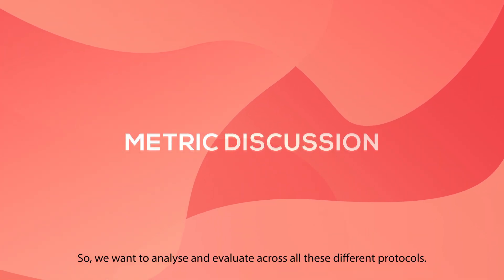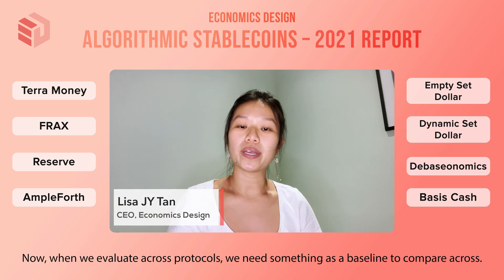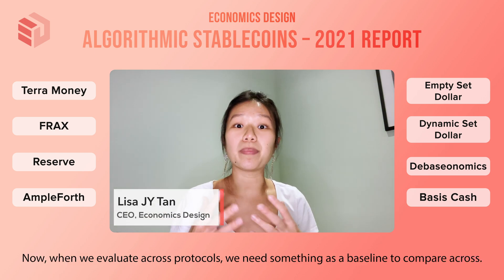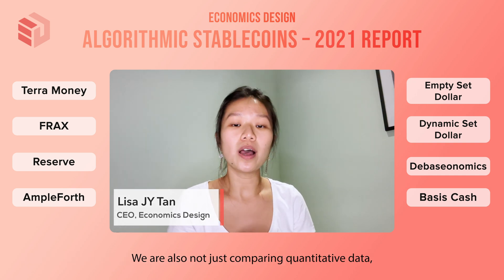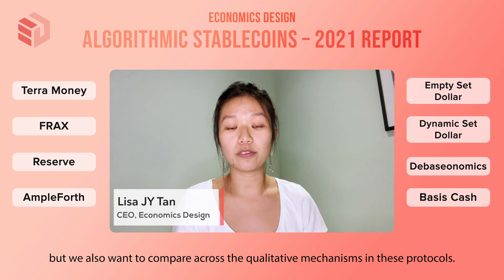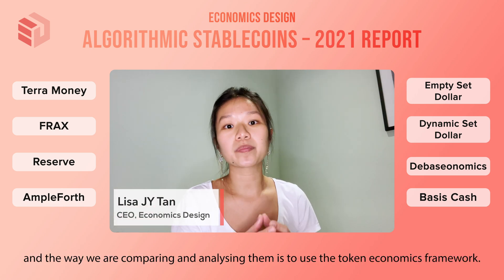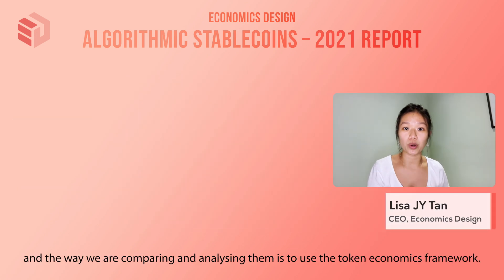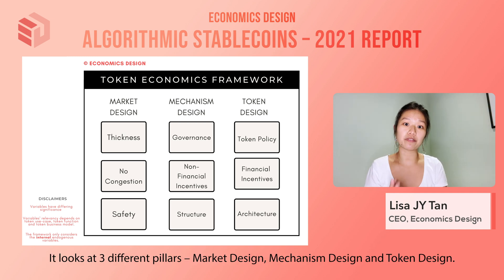We want to analyze and evaluate across all these different protocols. When evaluating across protocols, we need a baseline to compare against. We are not just comparing quantitative data but also qualitative mechanisms. With eight different protocols, the way we are comparing and analyzing them is to use the Economics Design Framework — the economics that goes into a token-based ecosystem — which looks at three different pillars: market design, mechanism design, and token design.